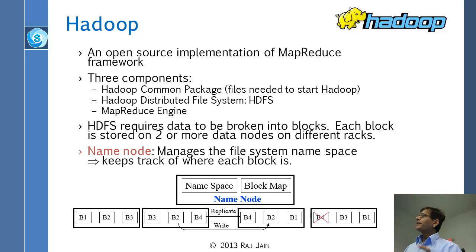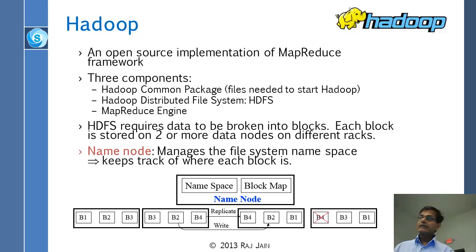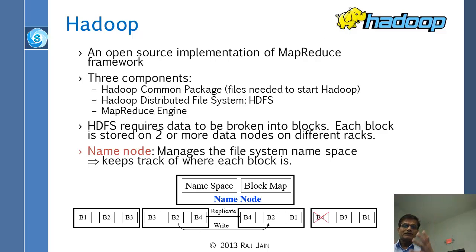Hadoop is an open source implementation of the MapReduce framework. It consists of three parts: a common package with all the files you need to start Hadoop, a distributed file system (HDFS), and a MapReduce engine, which we will describe in a bit more detail.